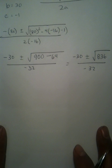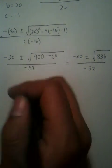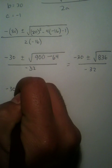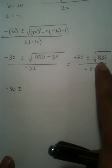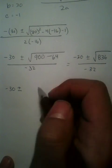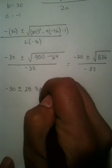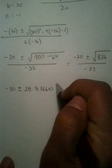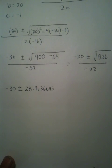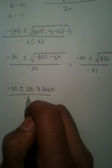Well, let's continue. This is going to lead us to have negative 30 plus or minus. In your calculator, take the square root of 836. You should get a decimal that looks like this: 28.9136645 and it's going to keep going all over negative 32.